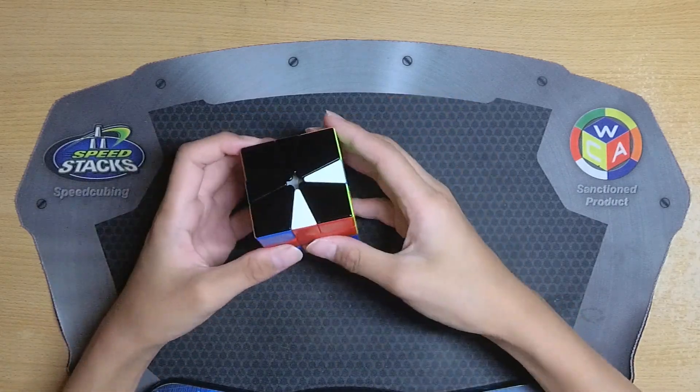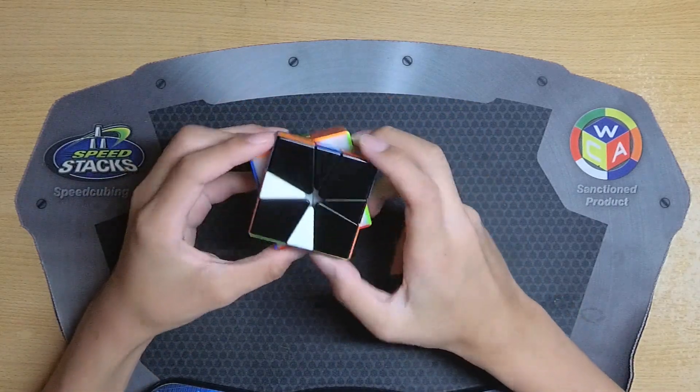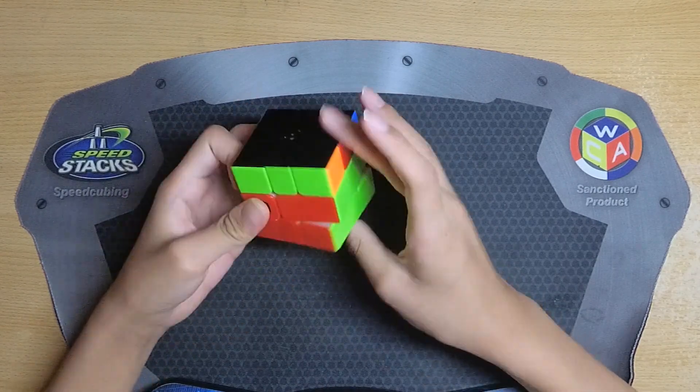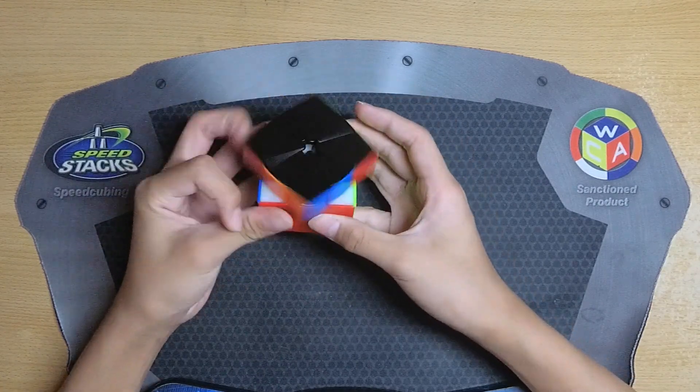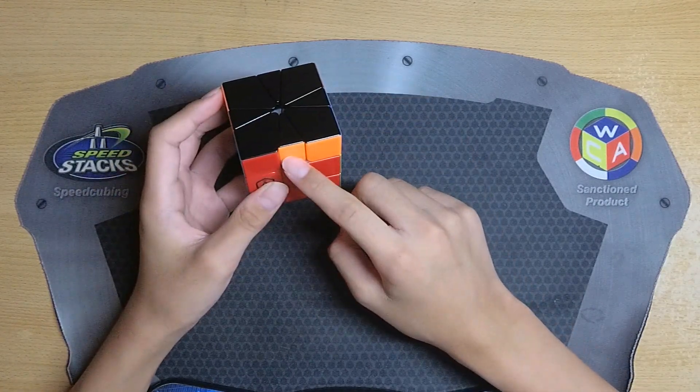Then I got a CO skip which is pretty lucky and I was also left with a really easy EO case here. I noticed that I have edge in the back.